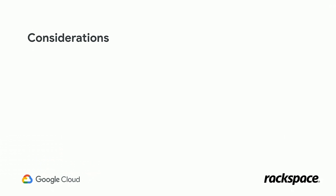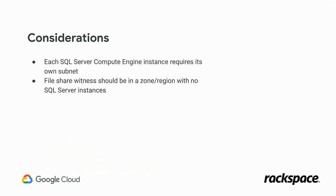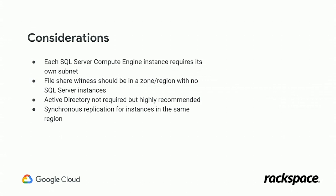Finally, let's go over some considerations for Always On in GCP. Each SQL Server Compute Engine instance requires its own subnet. The file share witness should be in a zone — in a single region deployment — or a region — in a multi-region deployment — that has no SQL instances in it. Active Directory isn't actually a requirement anymore, but I still highly recommend including it, mainly because it makes management a lot easier. Synchronous replication should be used for instances that are in the same region, and asynchronous replication for instances that are in different regions.